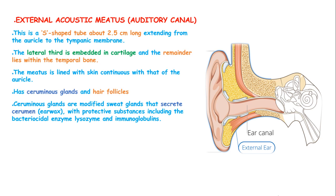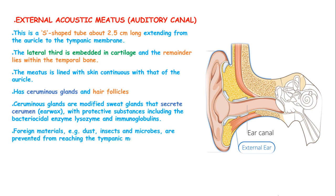These ceruminous glands secrete cerumen and are modified sweat glands. This earwax or cerumen is a protective substance containing bacteriocidal enzymes like lysozymes and immunoglobulins. Foreign materials such as dust, insects, and microbes are prevented from reaching the tympanic membrane by the wax, hairs, and the curvature of the meatus.